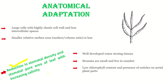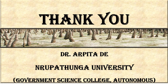There is also low chlorophyll content and the presence of cuticle on aerial plant parts, which helps in minimizing water loss. These are the key adaptive features noted in halophytes. I hope you have understood and enjoyed learning these features. If you have any confusion or doubt, please feel free to get back to me in the comment section. Thank you so much for your kind attention. Goodbye and see you soon.